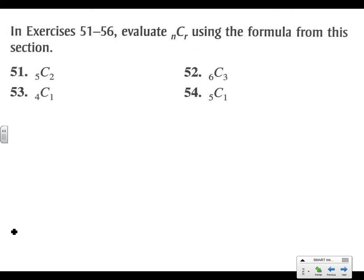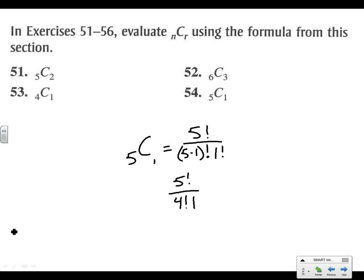Let's look at C(5,1): that equals 5 factorial over (5−1)! times 1!, which is 5! over 4! × 1!. The 4 factorials all cancel and we're left with 5 over 1 = 5.